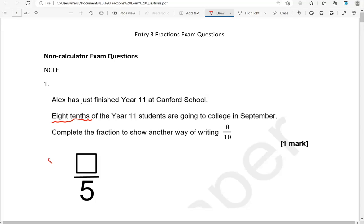So we have eight-tenths. And that's been changed to something over five. So what's happened to this number at the bottom, to the denominator? It's been halved. From ten, it's gone to five. So we'll do the same to the top number. What's half of eight? That is four. So four-fifths is another way of writing eight-tenths.